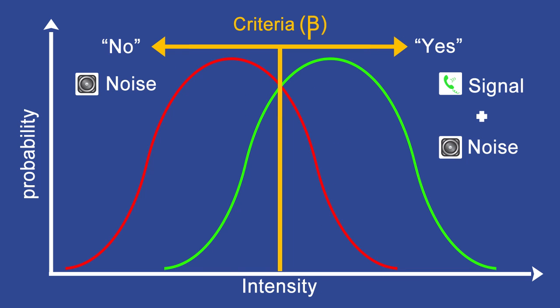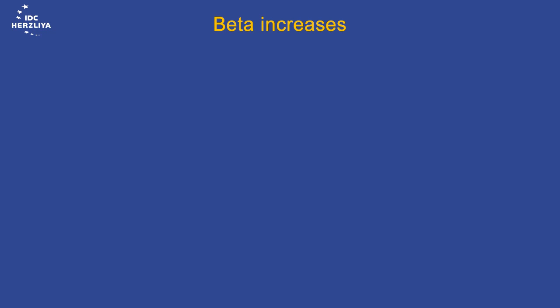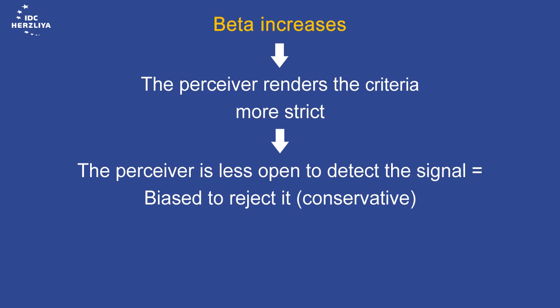We can see the beta criterion in the center, yes to the right, no to the left. As the beta increases, the perceiver renders the criterion more severe, and she is less lenient, less open to detect the signal. Thus, we will have more miss and correct rejection responses.